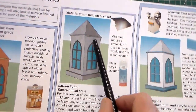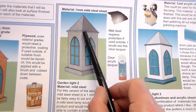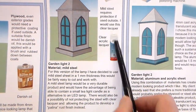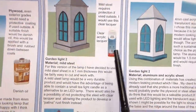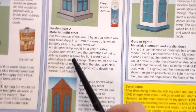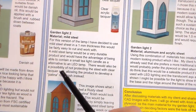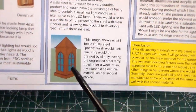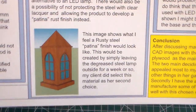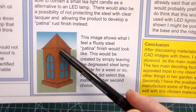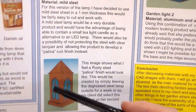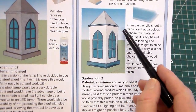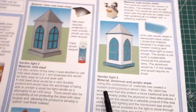The second material option is one millimetre mild steel sheet. I've suggested a clear lacquer for protection. I've noted it would be more durable but more difficult to work with, looking at the different properties of the metal and how it might meet my client's needs. I've also drawn a patina finish, which would be leaving the mild steel without a finish. The third option is aluminium and acrylic, and I've created those drawings as well.